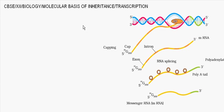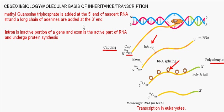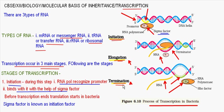Now the last step — termination. The rho factor of RNA polymerase can recognize the termination sequence, shown here in green color in the DNA strand. The rho factor recognizes the termination sequence, and the shape of the termination site is such that it removes RNA polymerase as well as the newly synthesized RNA. Both fall off from the template strand, and this stops the process of transcription.